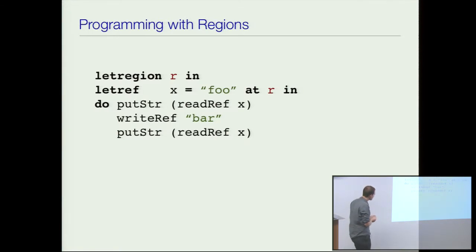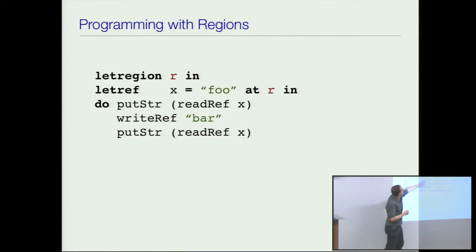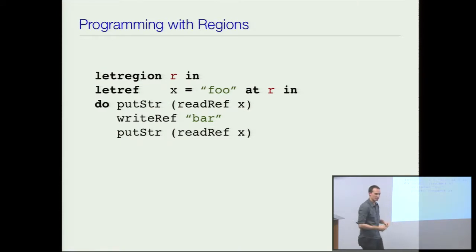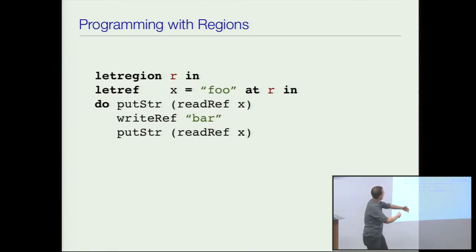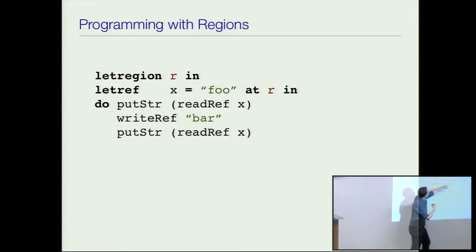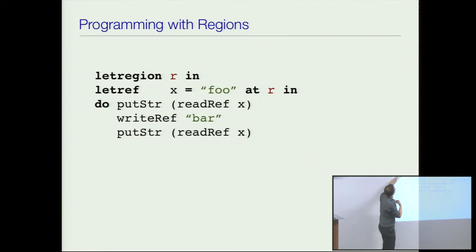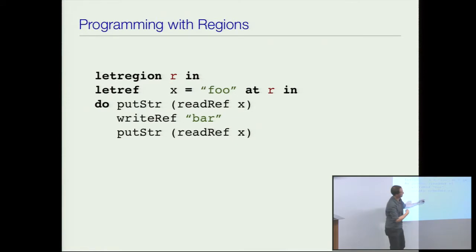What I've done here is added a new syntactic form which creates a new region. A region is a space in the heap where I can allocate things. So instead of just having one big heap, I partition the heap up into several regions. When I say create a new object, I say this reference goes into a particular region. I could have a 'let region R2' and define some more references and put them in different regions.